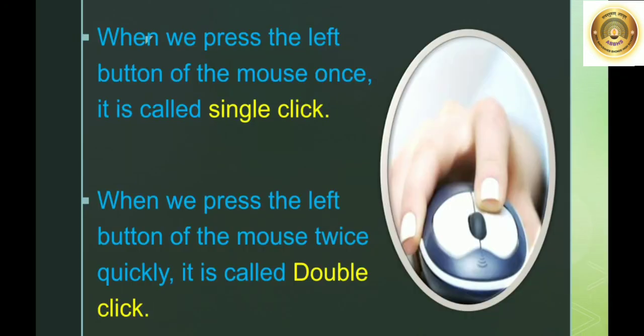Next is single click and double click. When we press the left button of the mouse once it is called single click. When we press the left button twice quickly, it is called double click.